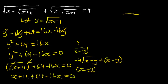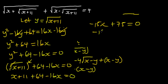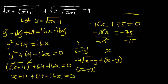From here, X minus 16X gives minus 15X, and 11 plus 64 gives 75, so minus 15X plus 75 equals zero. Sending 75 to the right-hand side gives minus 15X equals minus 75. Dividing both sides by minus 15, we get X equals 5.